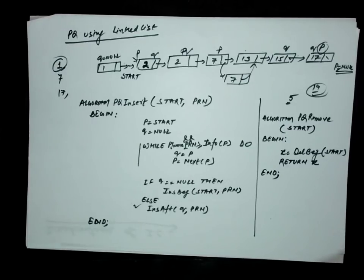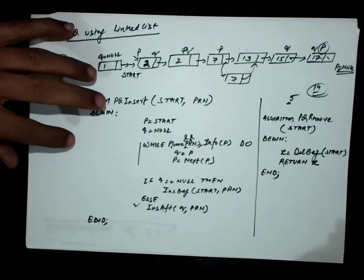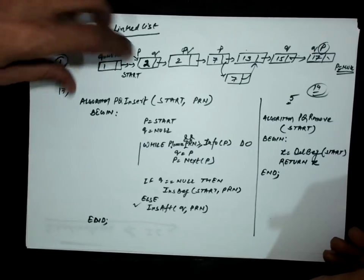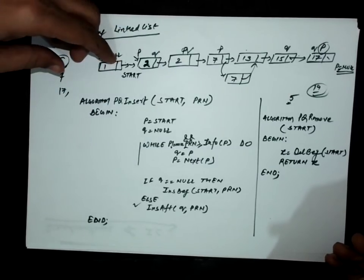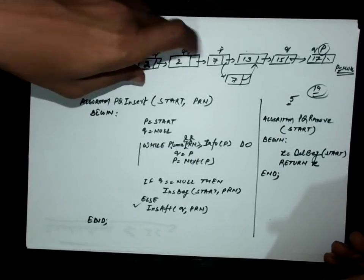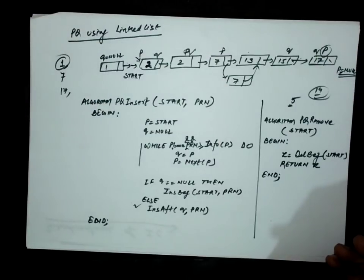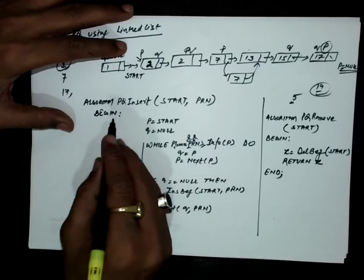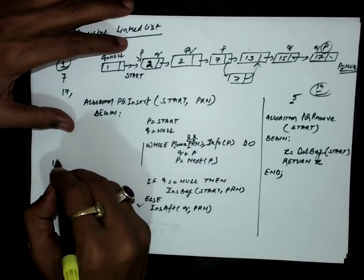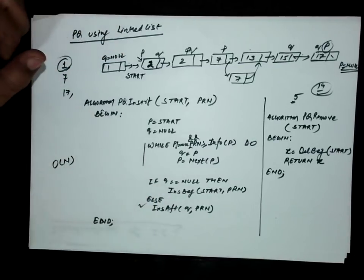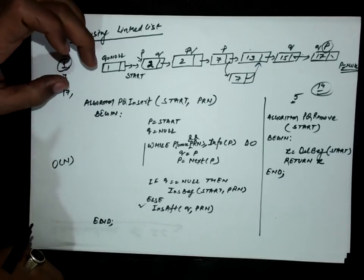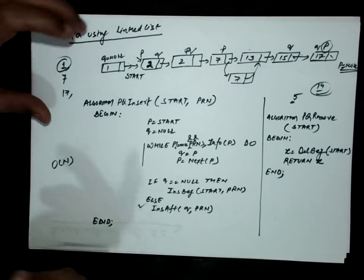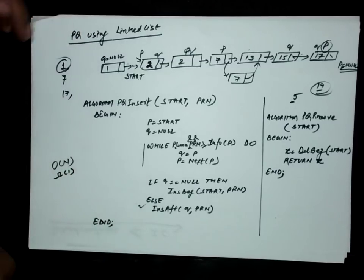Analyzing the algorithm: for PQ_insert, we must make comparisons, and the maximum number of comparisons equals the number of elements in the linked list. So the number of comparisons required in PQ_insert is O(n) in the worst case. In the best case, insertion happens at the beginning or after the first node, so the complexity is Ω(1).